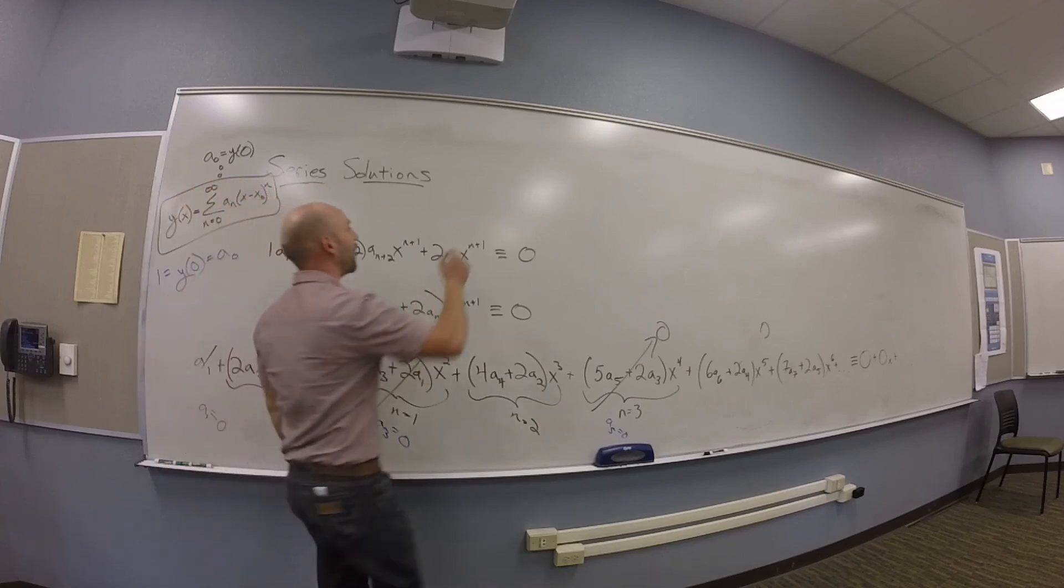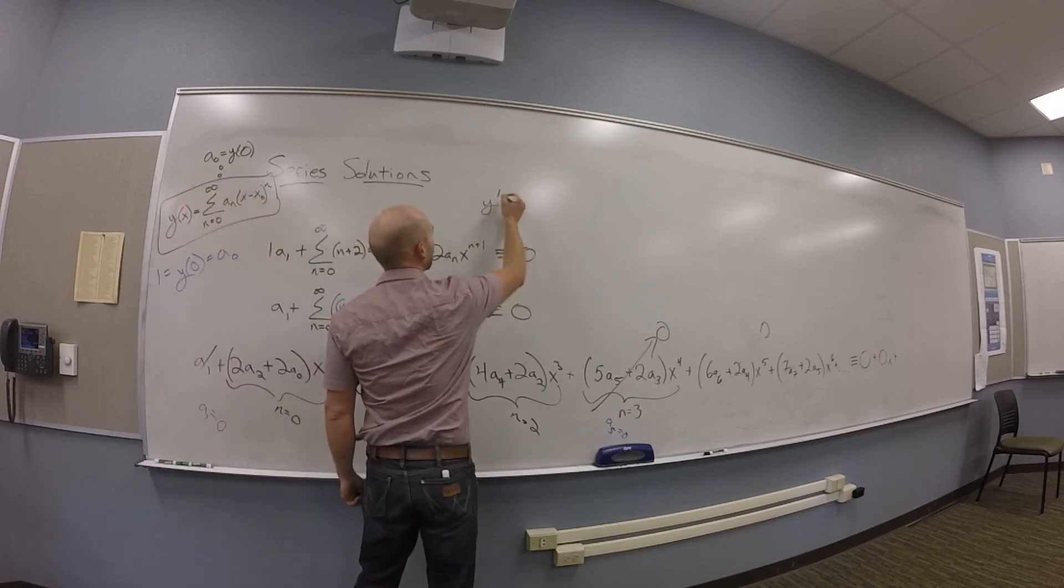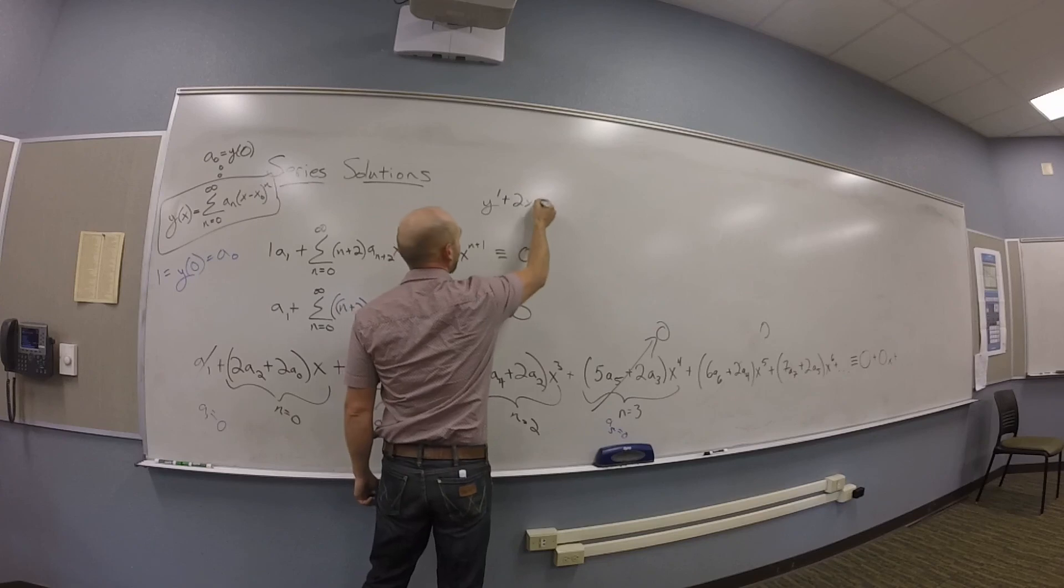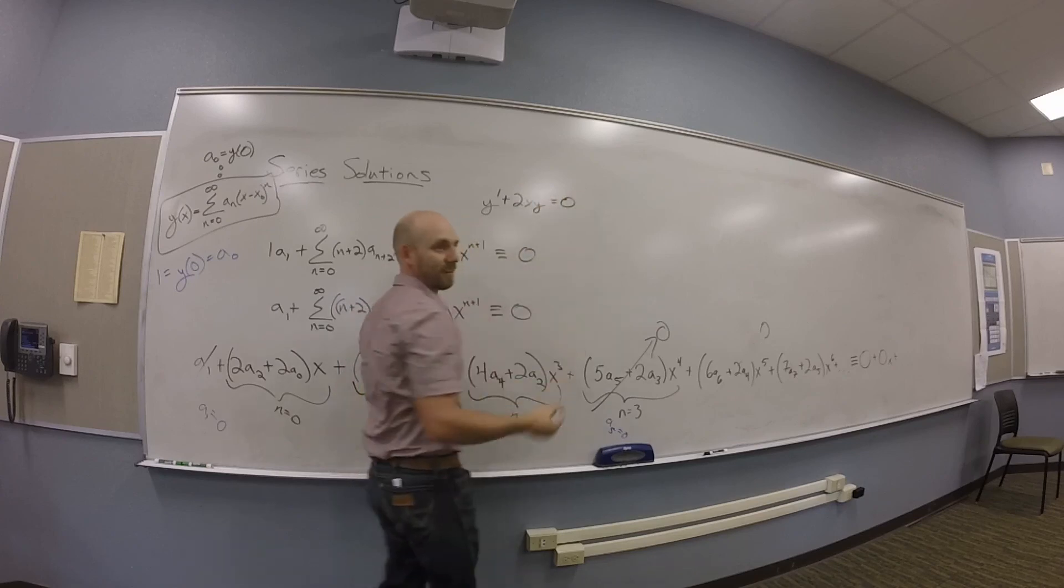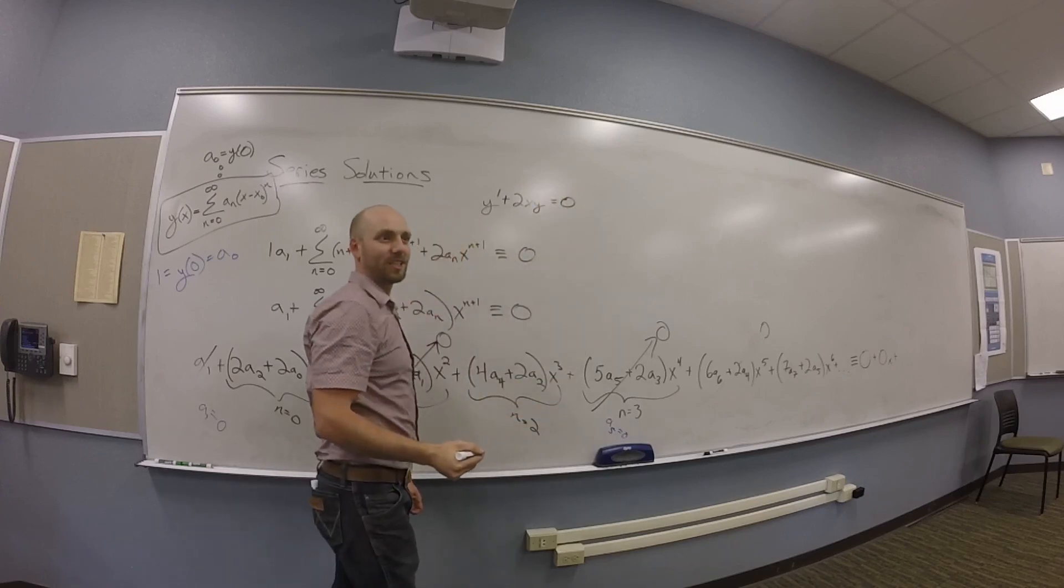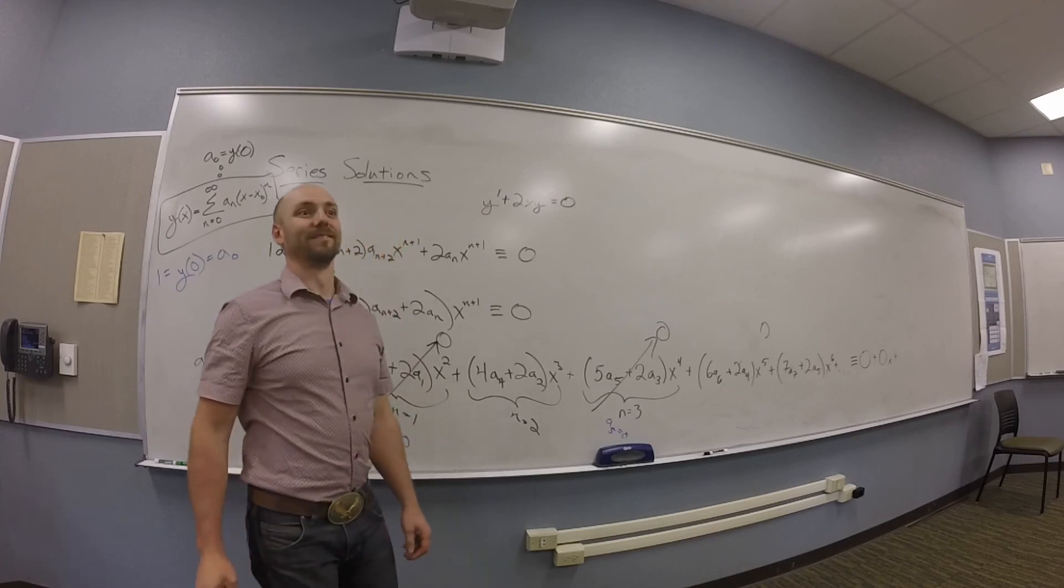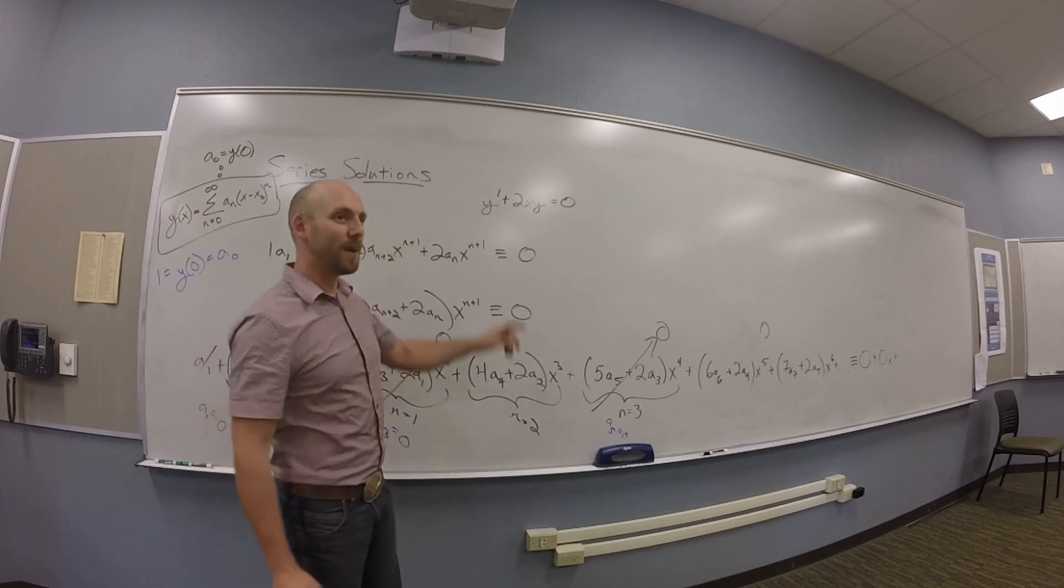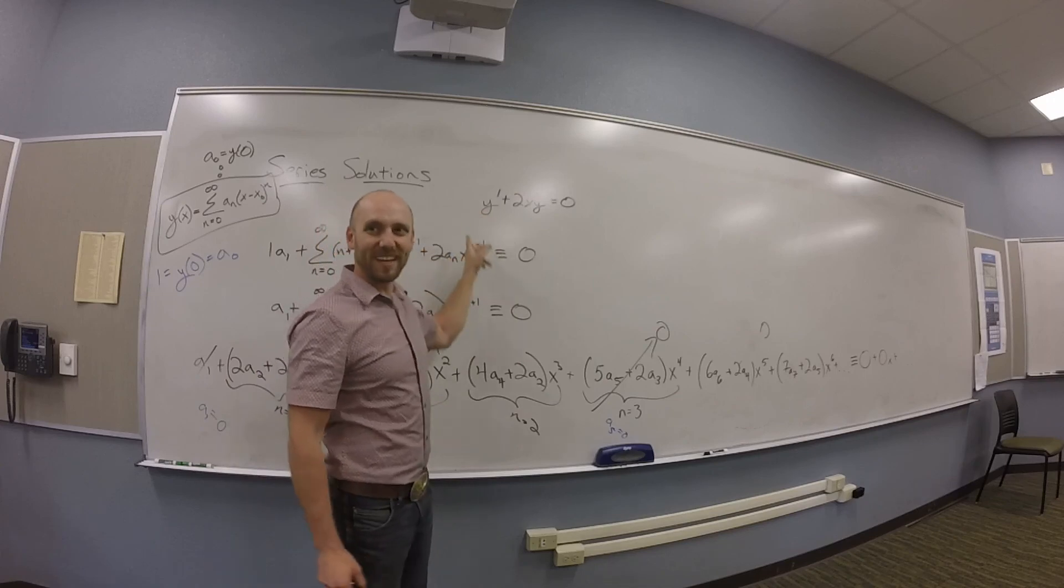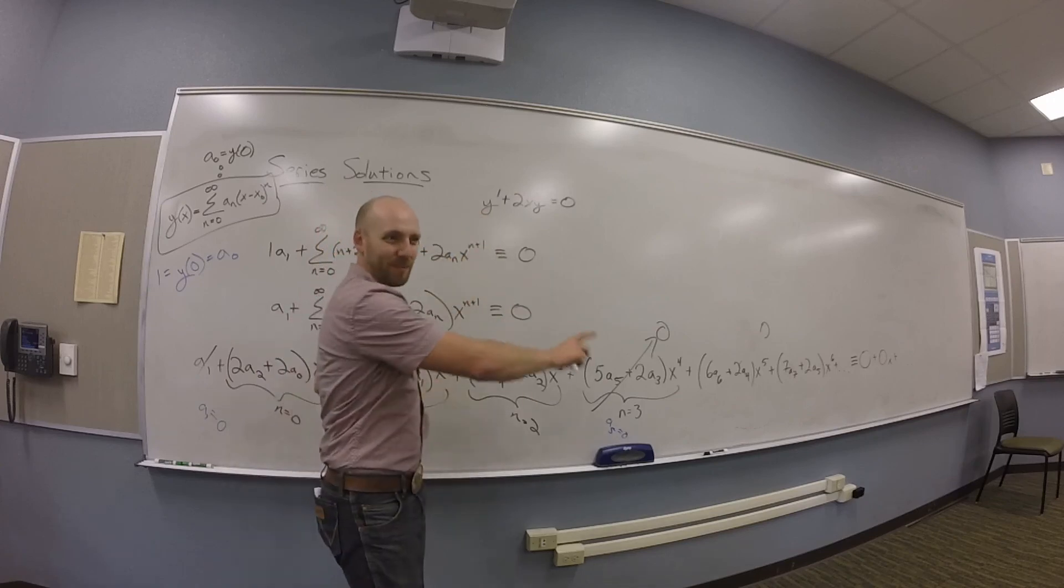So remember my original equation was Y prime plus 2XY is 0, right? So it's not a sine, but maybe a sign of something or something. I think maybe a chain rule would get you there. Fiddle with it a bit.